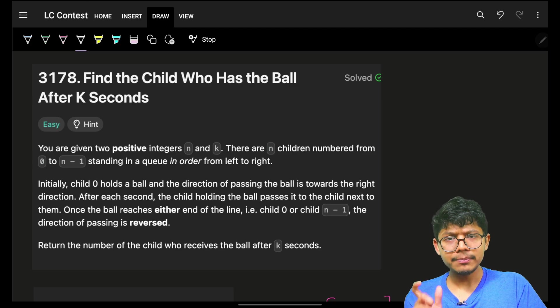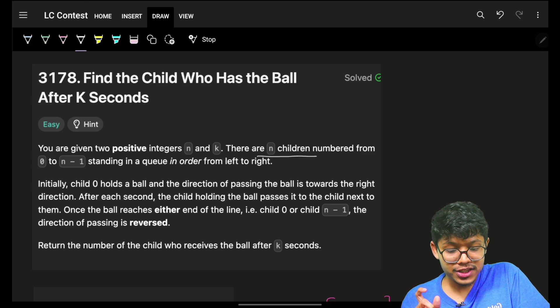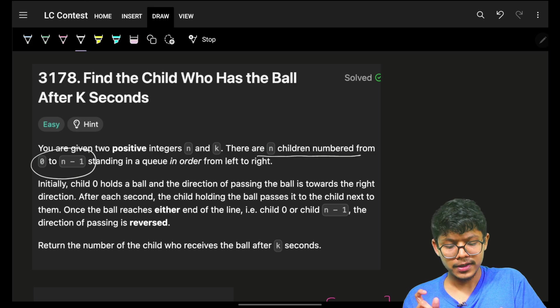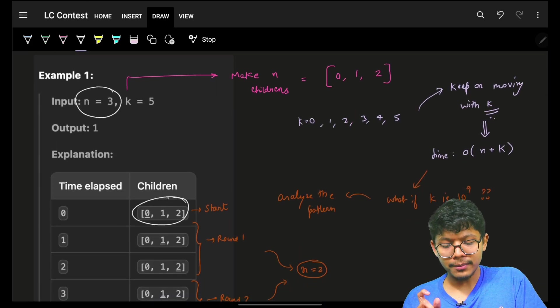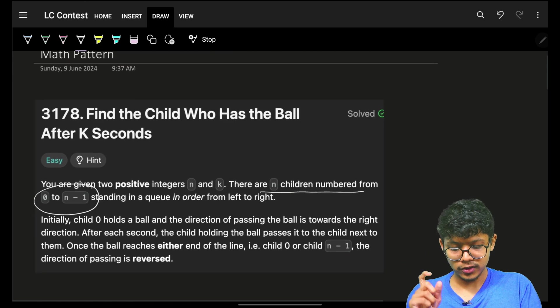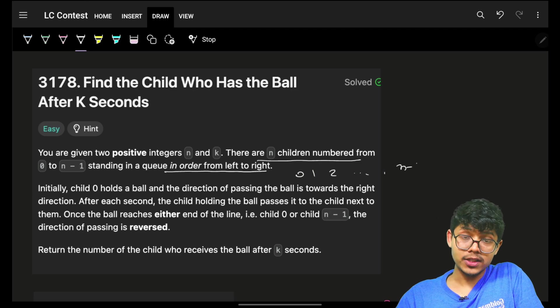So it's simply given that we are given two positive integers, n and k. There are n children numbered from 0 to n-1. These are the n children. Standing in a queue in the order from left to right, which means 0, 1, 2, up till n-1.